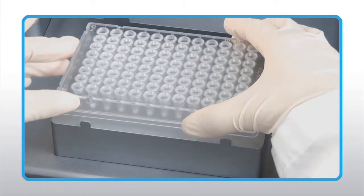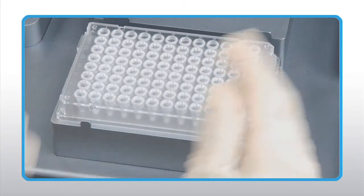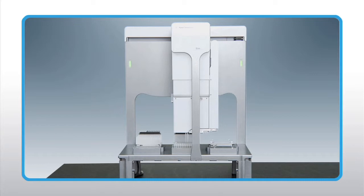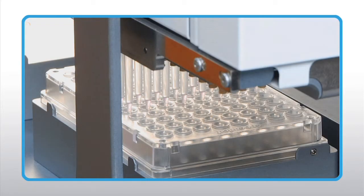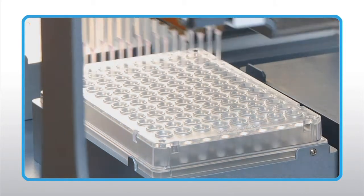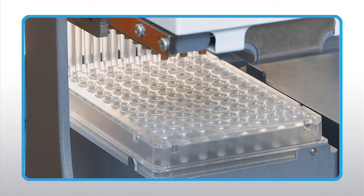After purification, the samples are checked for labeling efficiency. In the final step of the workflow, the Bravo platform combines the experimental and reference samples and adds the hybridization buffer. After incubation, the samples are now ready to be hybridized to the Agilent microarrays.